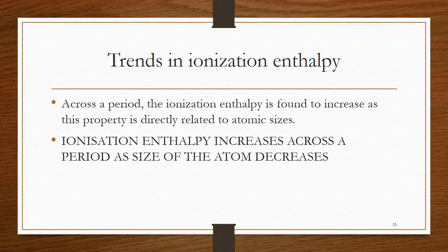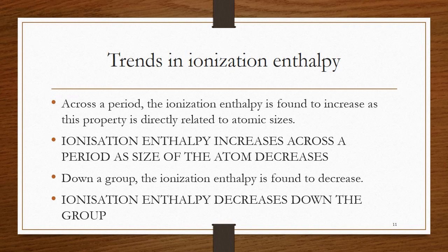What are the trends in ionization enthalpy? Across a period, ionization enthalpy is found to increase, because ionization enthalpy is directly related to atomic sizes. Across a period, size keeps on decreasing, so the valence electrons will be closer to the nucleus, and we will have to spend a lot of energy to remove a tightly bound electron. As a result, ionization enthalpy keeps on increasing from left to right in a period. Moving down a group, ionization enthalpy is found to decrease — again related to sizes. Down the group, size keeps on increasing, so the valence electron is far away from the pull of the nucleus, making it easy to expel the electron from the loosely bound atom.